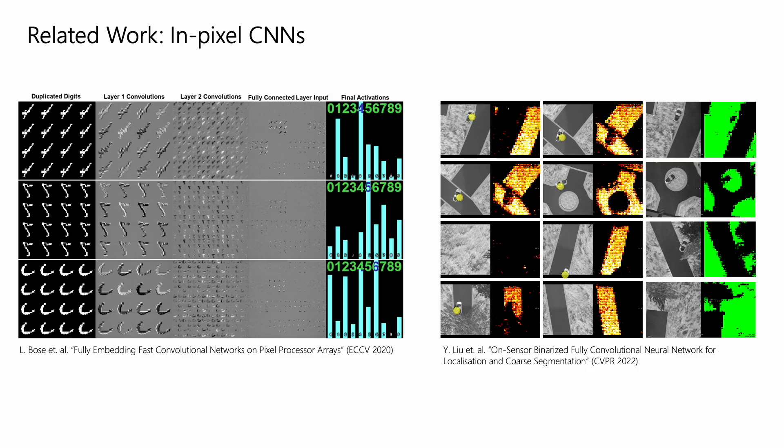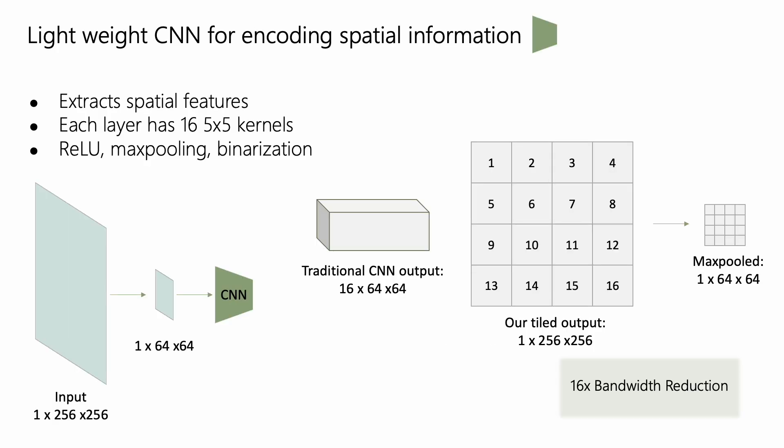Prior in-pixel AI works showed implementations of in-pixel CNNs for tasks such as MNIST classification to core segmentation. However, none thus far have utilized the temporal redundancies, so we build off of these works, but we also add in the temporal dimension. Our CNN is built off of Bose et al. CNN for on-sensor operation.